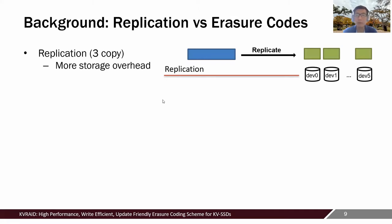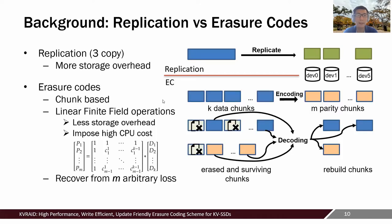A little background on data redundancy: there are mainly two approaches. First is replication, which simply maintains multiple copies of the data in different devices, introducing significant storage overhead. Second is erasure coding, which encodes multiple data chunks or data blocks into code blocks and spreads the data and code blocks into different devices. Erasure coding can greatly improve storage efficiency; however, it requires high computation overhead.